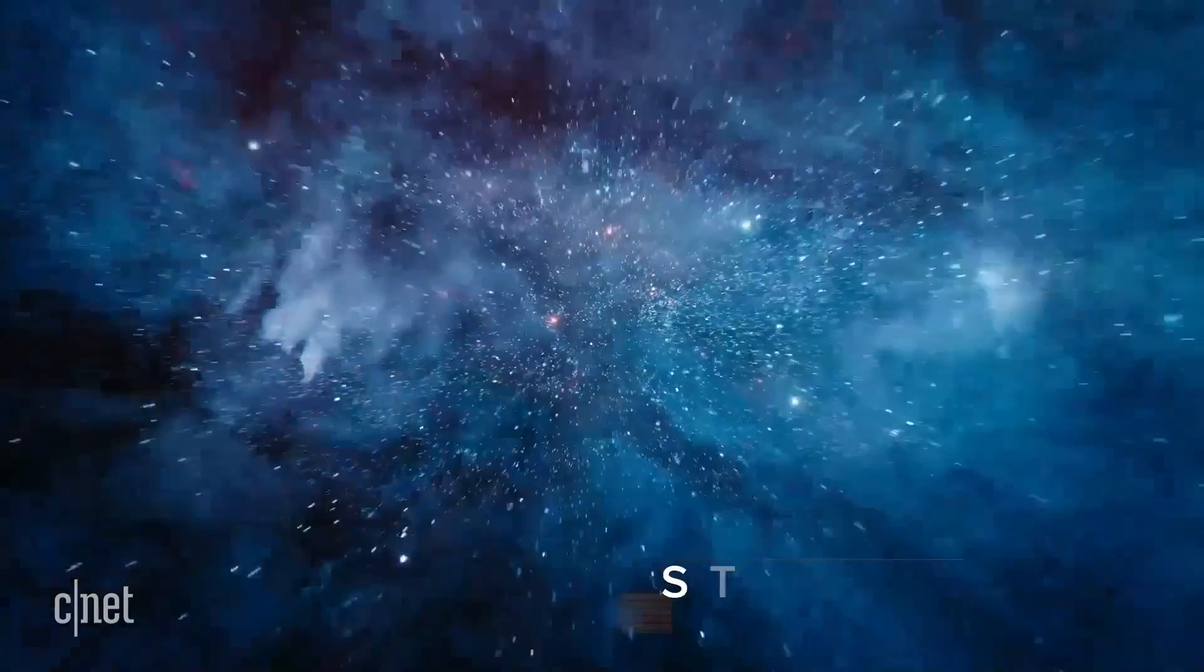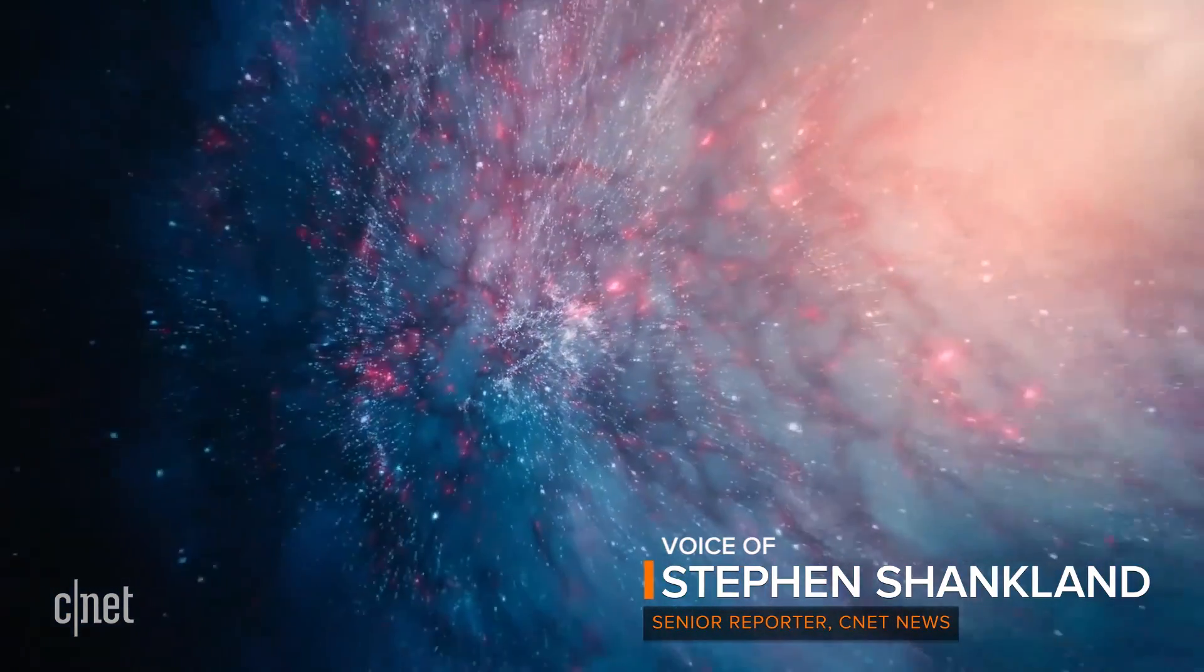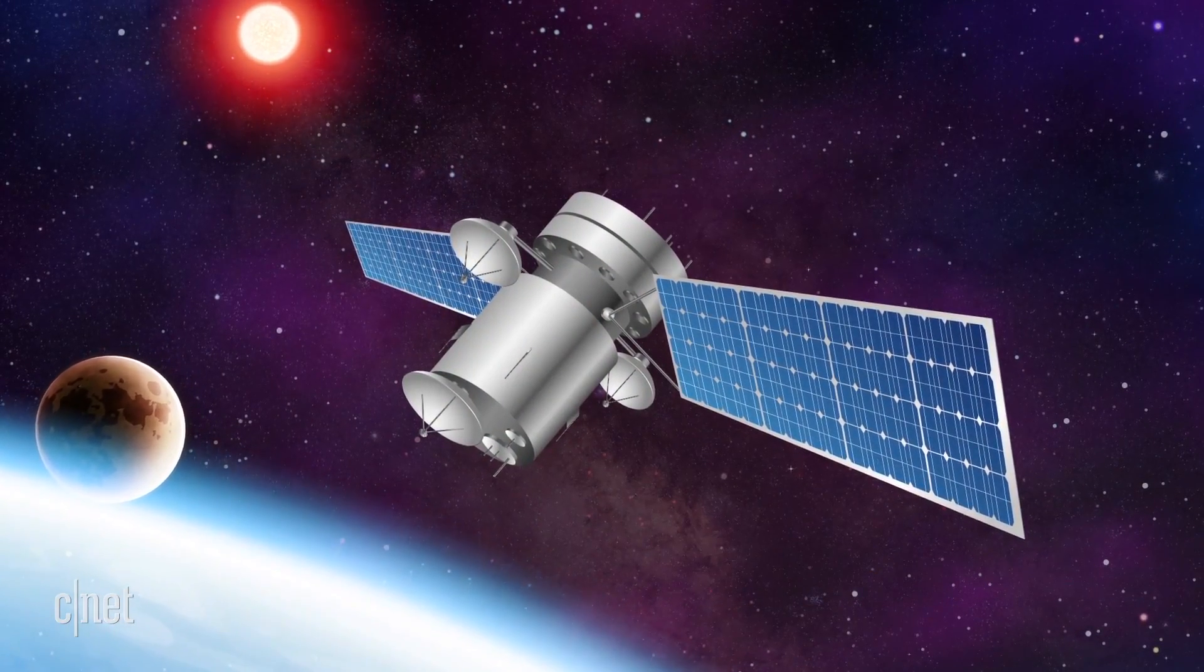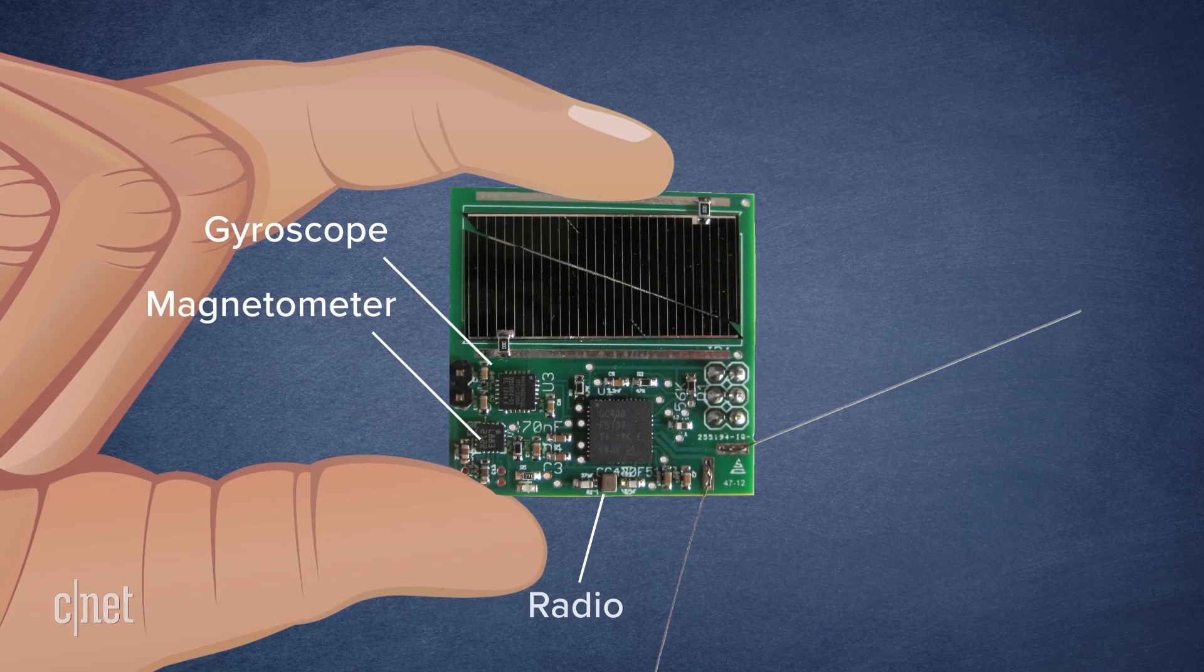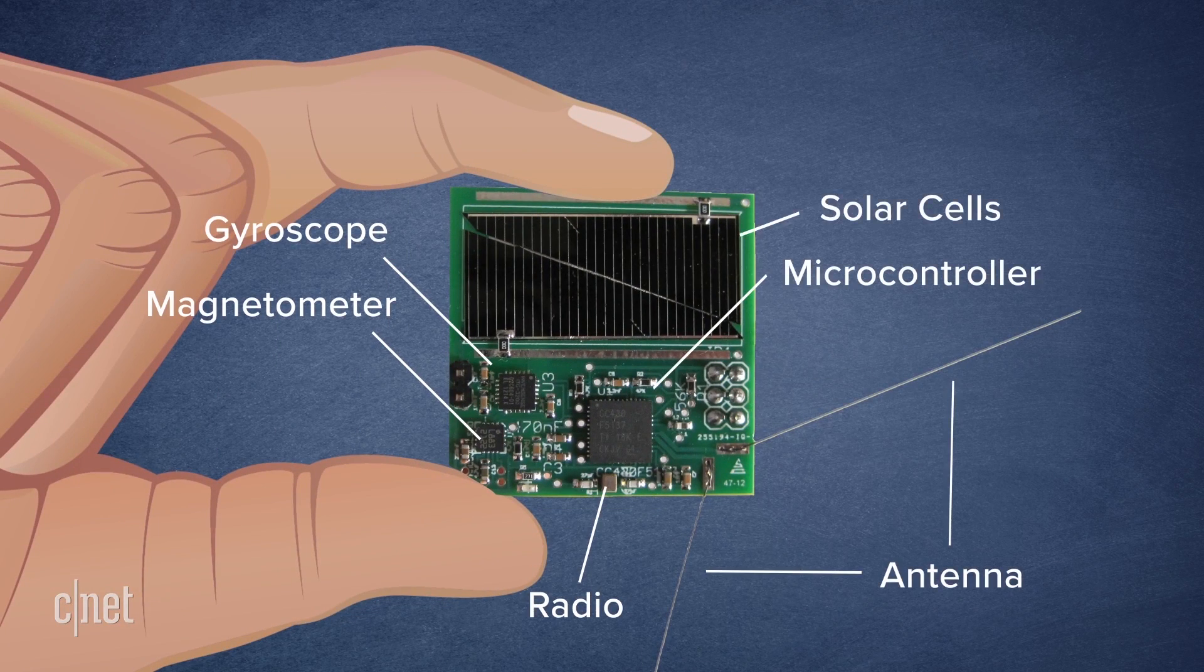In Starshot's master plan, which could take flight two decades from now, a mothership orbiting Earth will launch a tiny probe called a nanocraft. The nanocraft will carry data-gathering electronics on a one-way mission to the Alpha Centauri system.